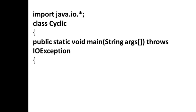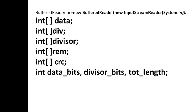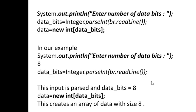This is the program for a Cyclic Redundancy Check. The data types are declared: data, dividend, divisor, remainder, and CRC. The first section of code prompts the user to enter the number of bits. We give eight, and then integer parse reads the line and stores it in the variable 'bits', representing the total number of bits.